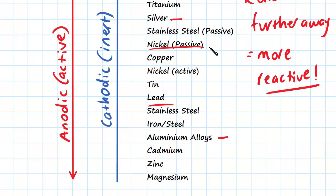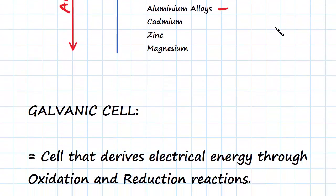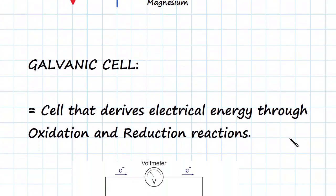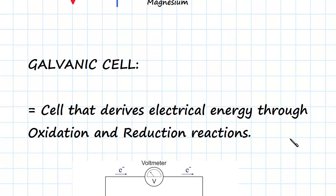So let's have a look at this galvanic cell and put this into context. A galvanic cell is a cell that derives electrical energy through oxidation and reduction reactions, like we learned about in the previous video.